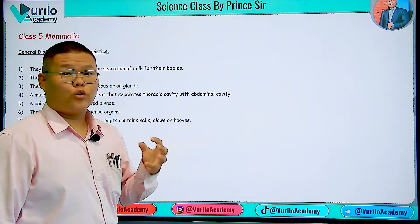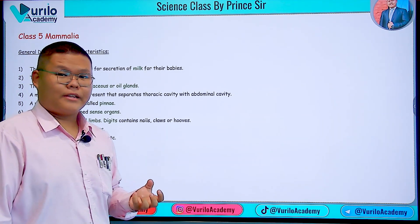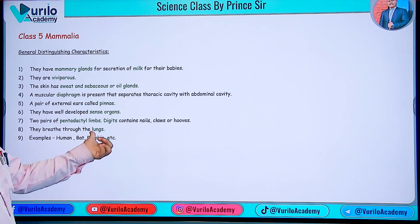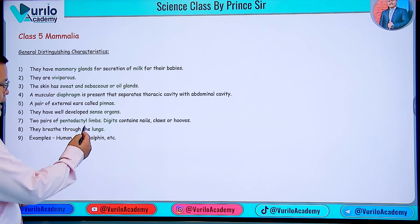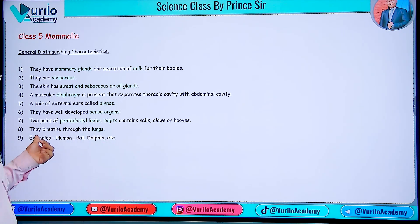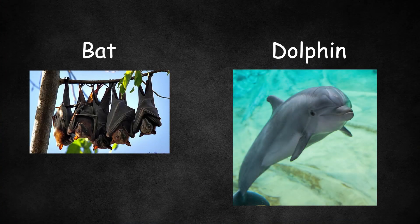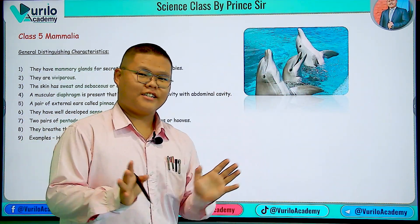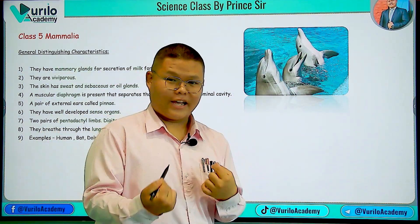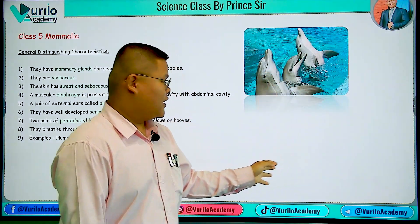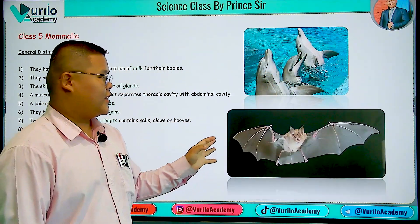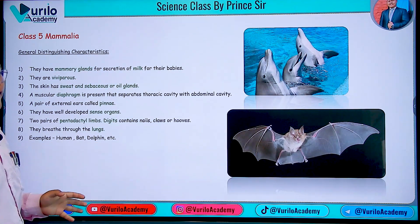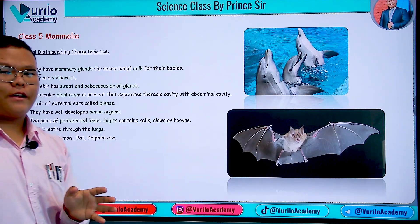Mammals breathe through the lungs — this is a typical characteristic. Examples include humans, bats, and dolphins. So these are the typical general characteristics of Class 5, Mammalia.